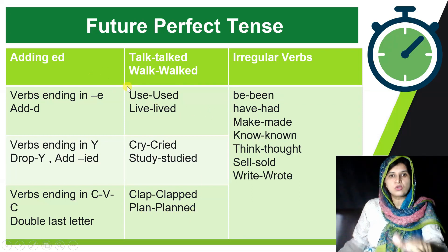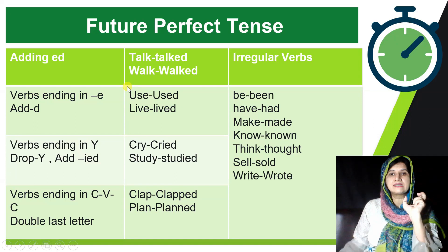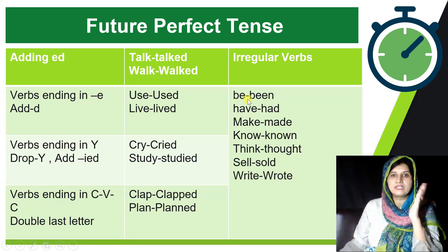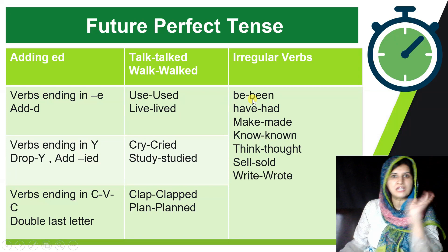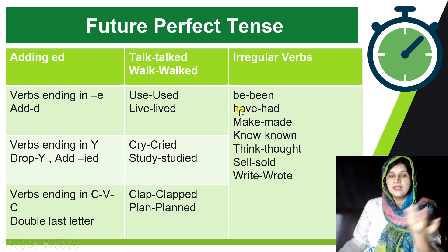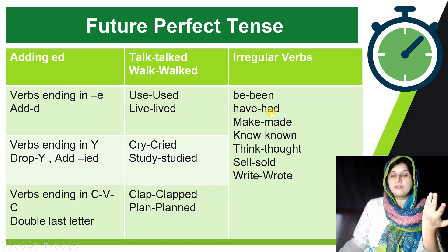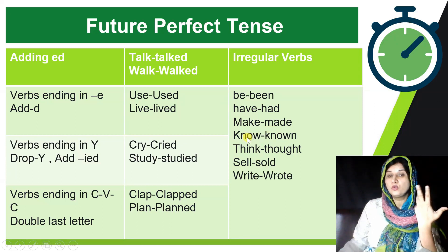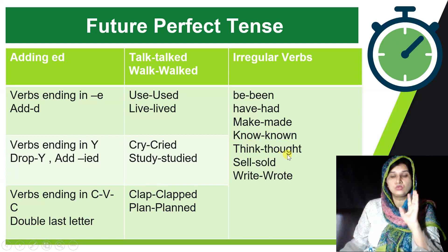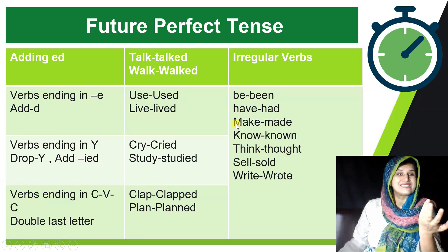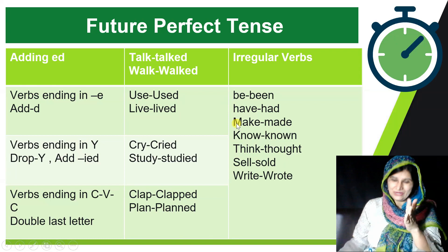Those were regular verbs. There are also irregular verbs which form the past participle differently: have → had, make → made, know → known, think → thought. There is a long list of irregular verbs and you need to memorize them.